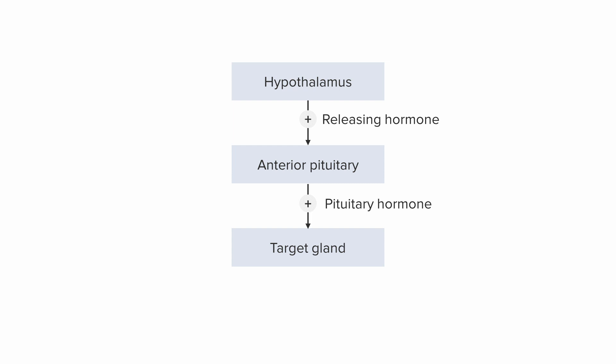As the anterior pituitary is secreting all of this hormone, there's something called feedback that will feed back onto the hypothalamus and tell it that we have a lot of pituitary hormone out. It can stop secreting the releasing hormone and thus close the loop and maintain homeostasis.